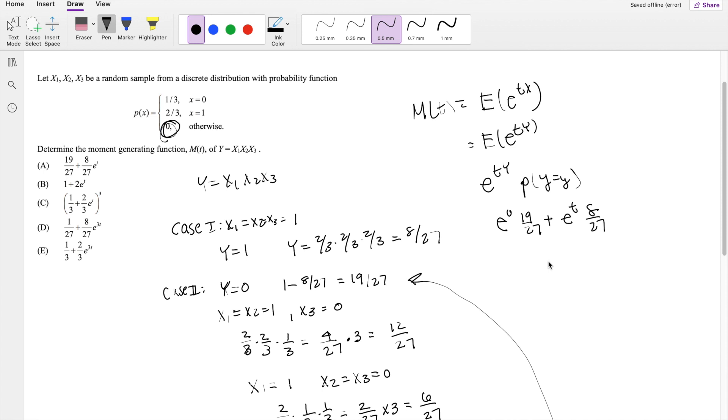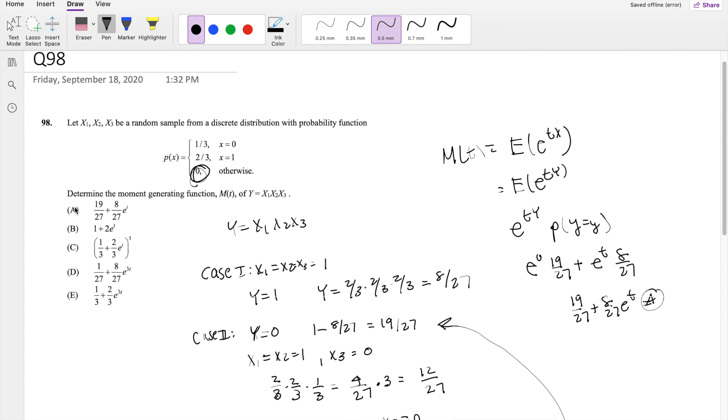So simplifying this, you get 19/27 plus 8/27 e to the t, which is our answer, a. If you guys have any questions, feel free to leave them down below. Otherwise, as always, make sure you like, subscribe, and share. Bye!